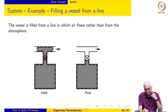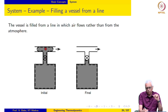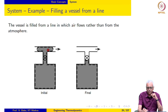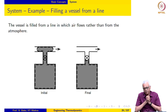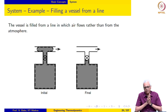We open the valve, a crack providing resistance and making sure that the filling process takes place slowly. As the air or steam from the line enters the vessel, the process continues, and finally, once this has entered, we close the valve and this is the final system. Notice that the system as defined here contains the same amount of mass from beginning to end, and the process takes place slowly thanks to the valve.